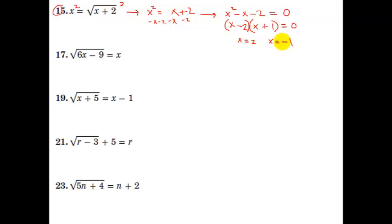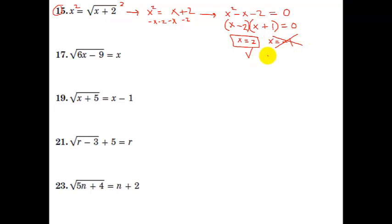Now let's plug both of these back in and see if they work. If I plug in 2: 2 plus 2 is 4, and the square root of 4 is 2 — so that one works. Let's plug in negative 1: I get negative 1 plus 2, which is positive 1, and the square root of positive 1 is positive 1, not negative 1. So, this was an extraneous solution — it did not work. The only solution to this equation that I can use is x equals 2.